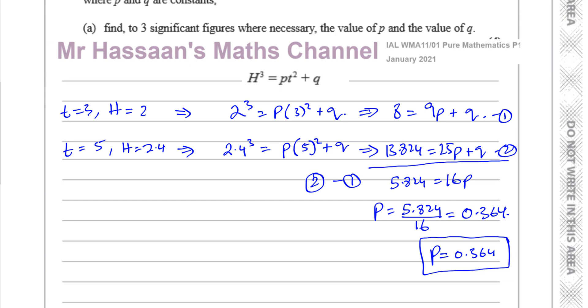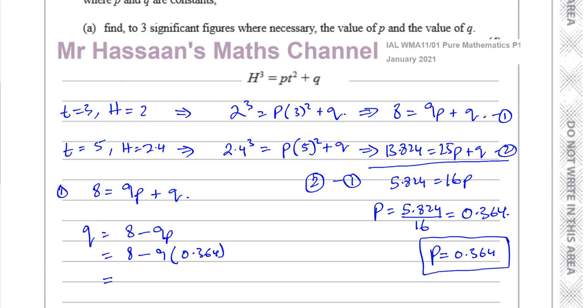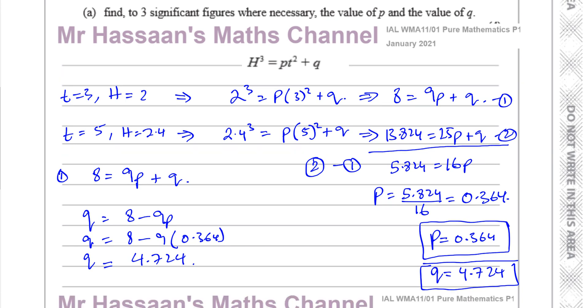Okay, now the second part is to find q. Now q, we can use the first equation. The first equation is more friendly. So we have 8 equals 9p plus q. Now I know that means q is equal to 8 minus 9p. Just rearranging it, that's 8 minus 9 times 0.364, and that will give us the value of q. So I take this value, I multiply it by 9, and then I do 8 minus my answer, and it gives me 4.724. It says 3sf, but this is like an exact value, so we could actually leave it like this. I would prefer to leave it like this. I'm sure if you did write it as 4.72, it would also be perfectly acceptable. That's part a done.